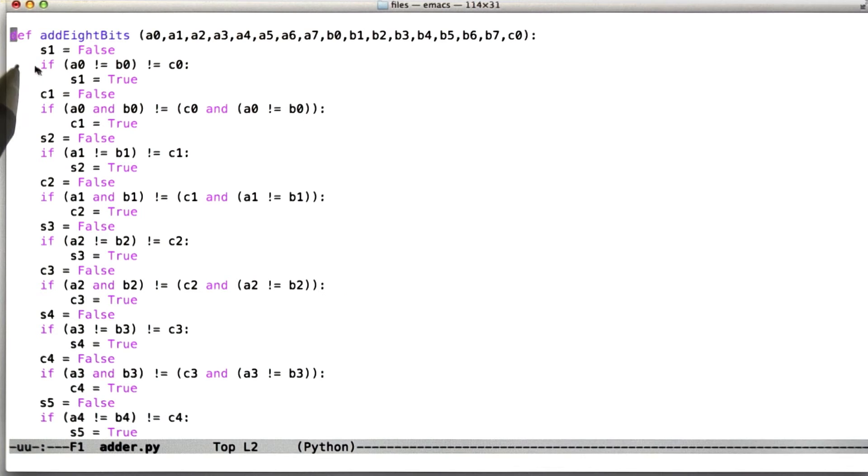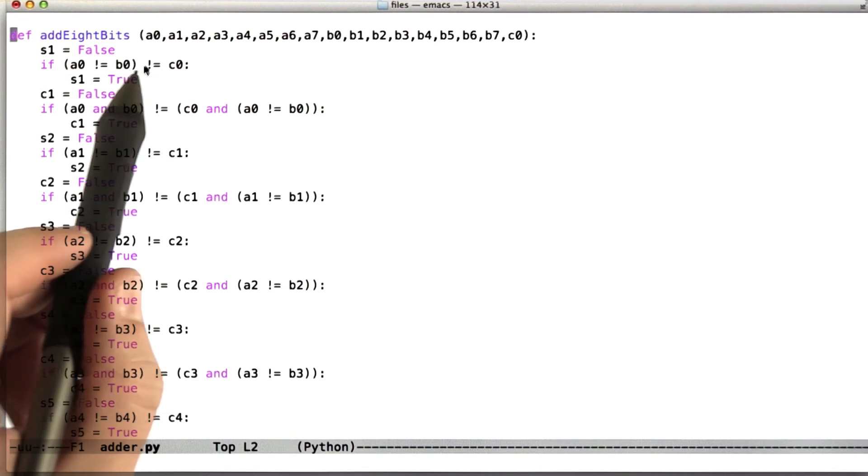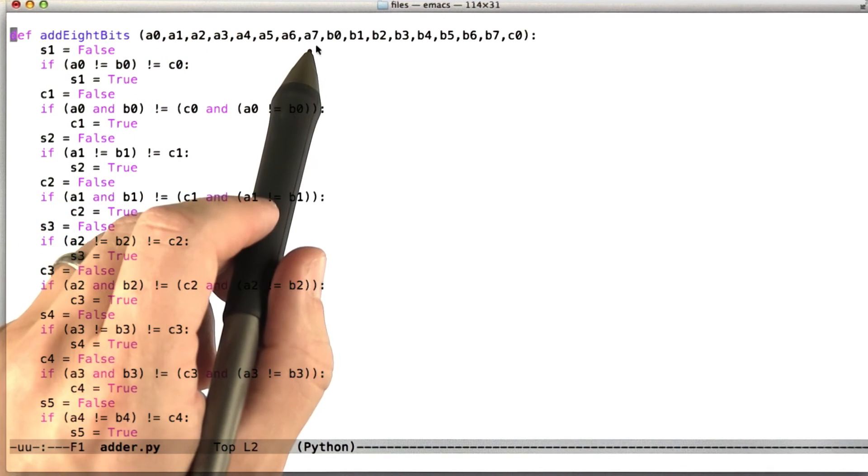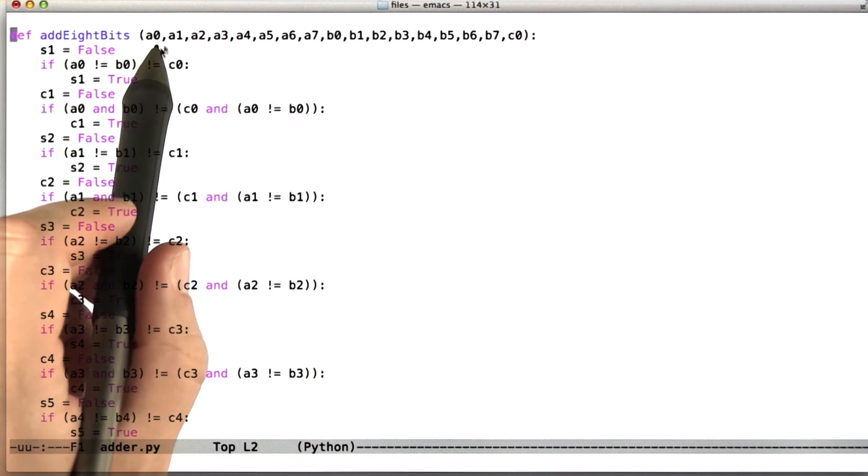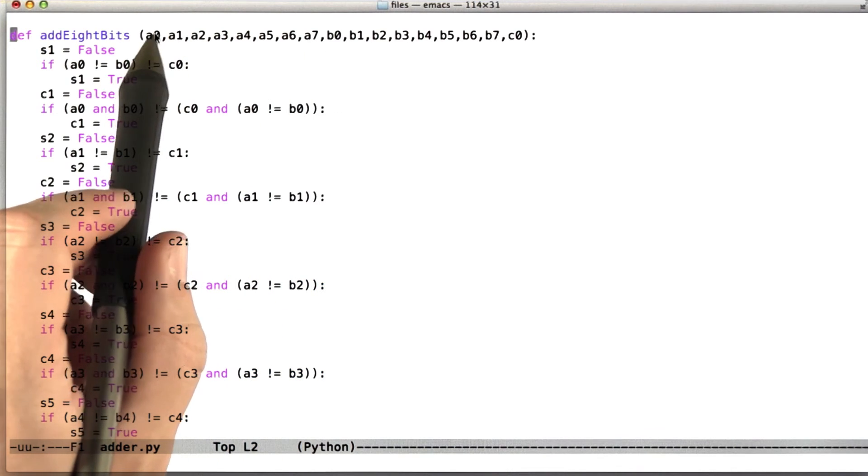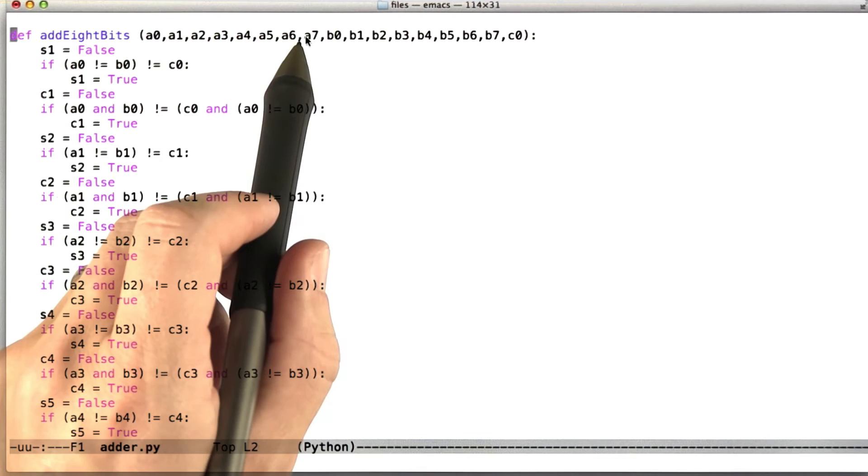So now let's look at the code. So here I have some Python code implementing an 8-bit adder. So what you can see is it takes A0 through A7, that is to say 8 bits of input that constitute parts of A, where A0 is the low order bit and A7 is the highest bit.